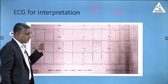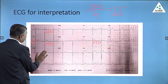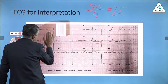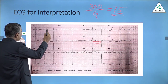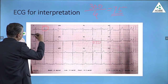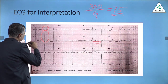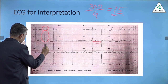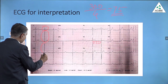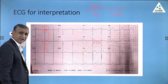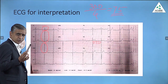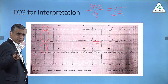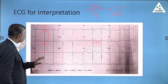Then sinus rhythm, normal heart rate. The third thing I always tell you is the axis. Lead 1 is positive, lead 2 is also positive, lead 3 is also positive — all are positive. Axis is normal.